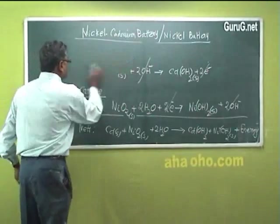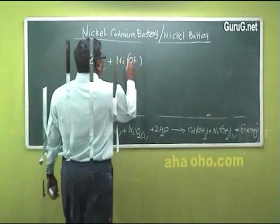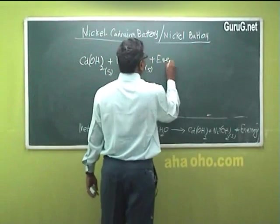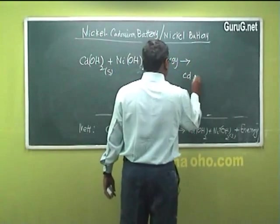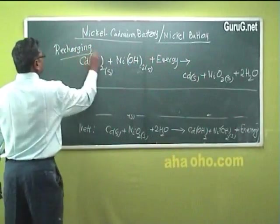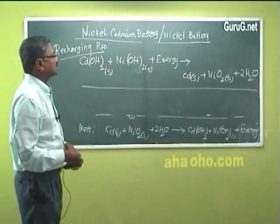The total recharge reaction can be written like this: cadmium hydroxide plus nickel hydroxide plus electrical energy to give back cadmium solid. This is the recharging reaction, net reaction taking place in a nickel cadmium battery.